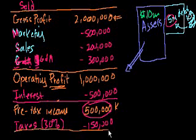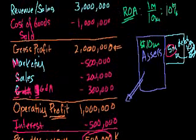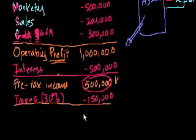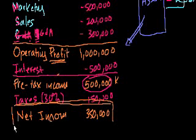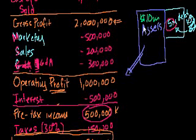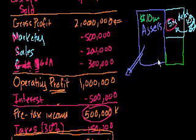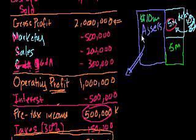And then we are done — we've finally paid off everybody we need to pay off. We started off with $3 million up here, kept paying a bunch of expenses, and now we're left with $350,000 of net income. This is what goes to the owners of the company. Going back to our balance sheet, we had a $10 million asset, $5 million of debt, and what's left over is equity — $5 million of equity in book value terms.